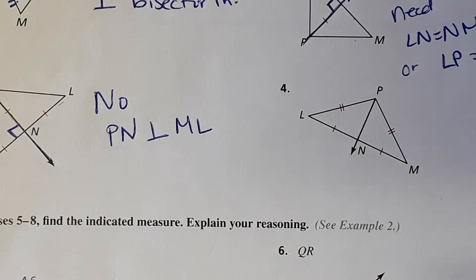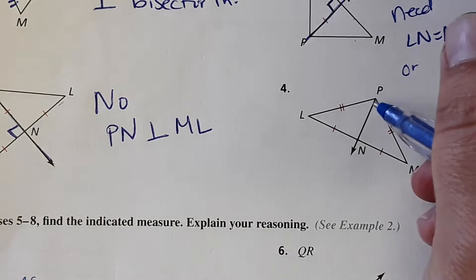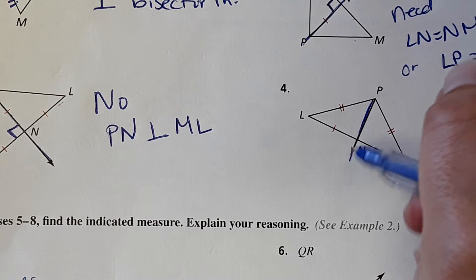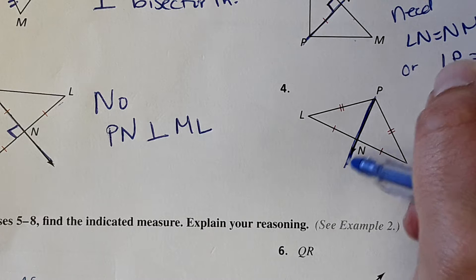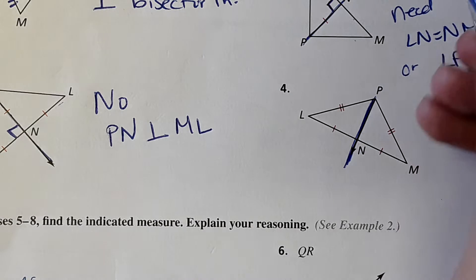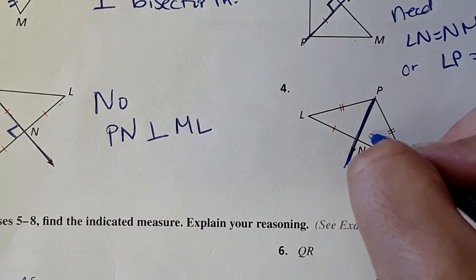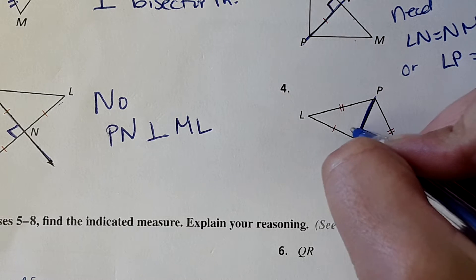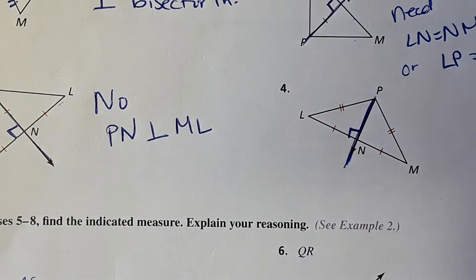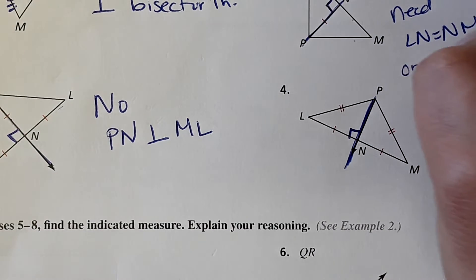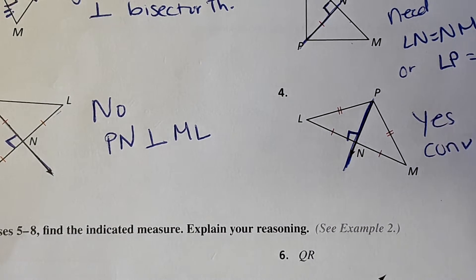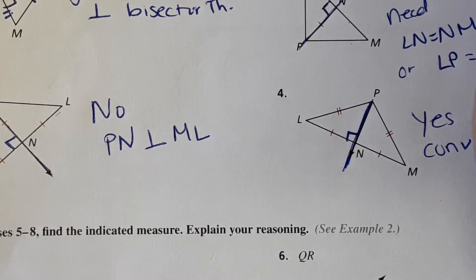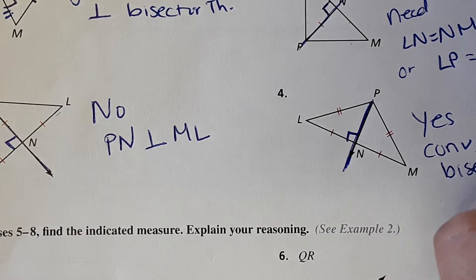And then number four — can we prove that this is a perpendicular bisector? Yes, we can. Because two of the conditions are met, then we can say that this is perpendicular. So yes, converse of perpendicular bisector theorem.